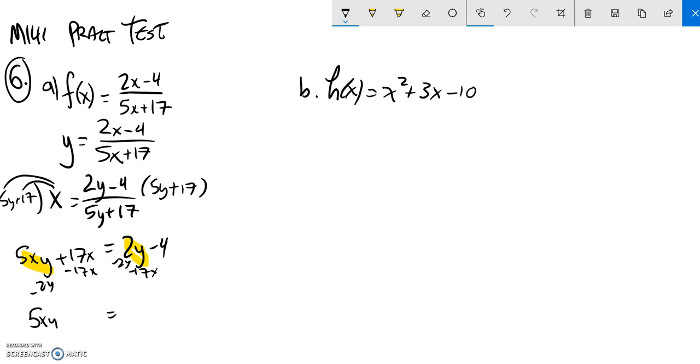So over here, I'm going to end up with a 5xy minus 2y. And on the right-hand side, a negative 17x minus 4. My 7 went crazy.